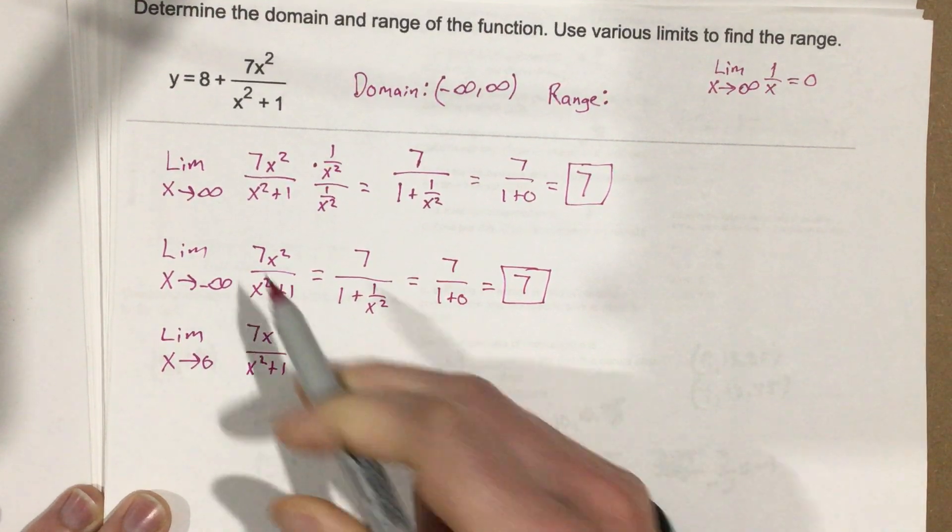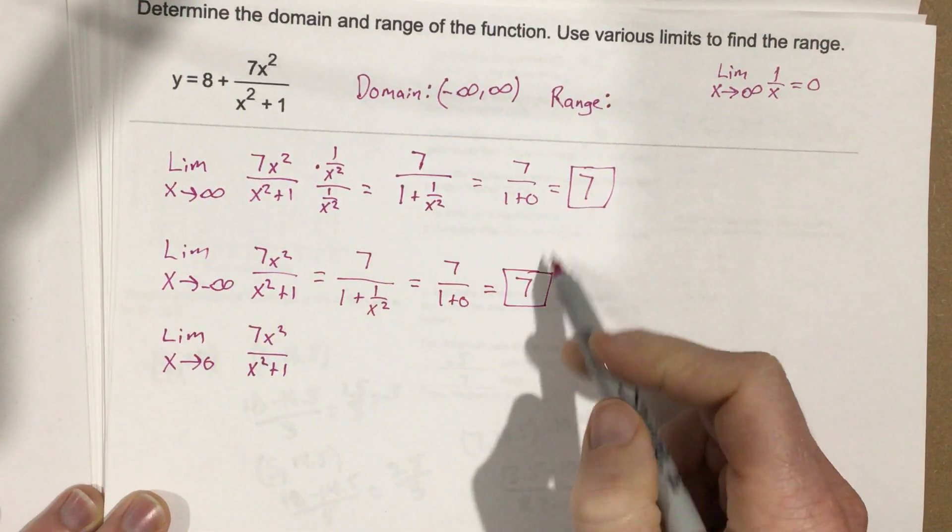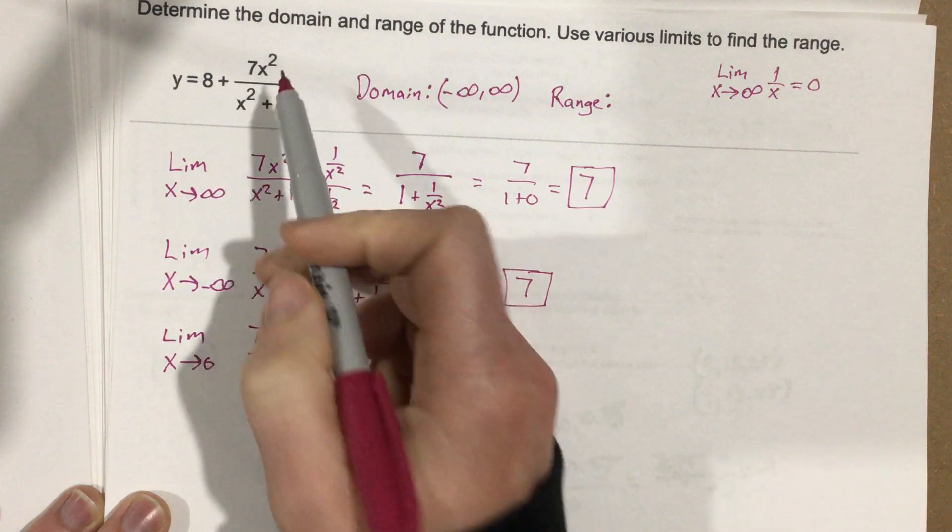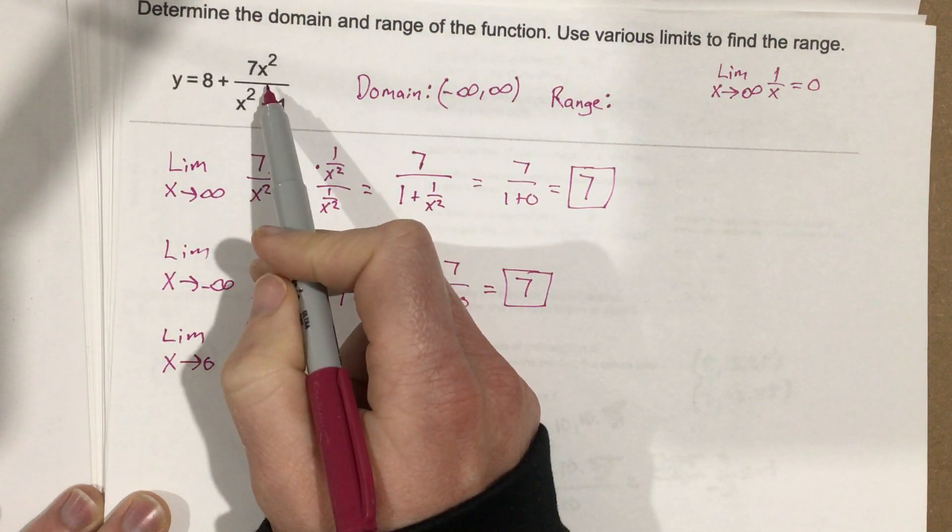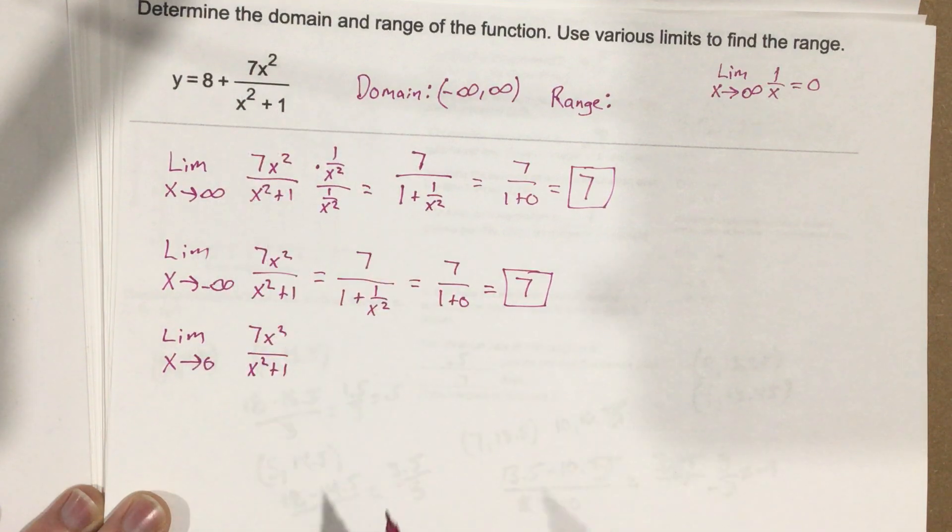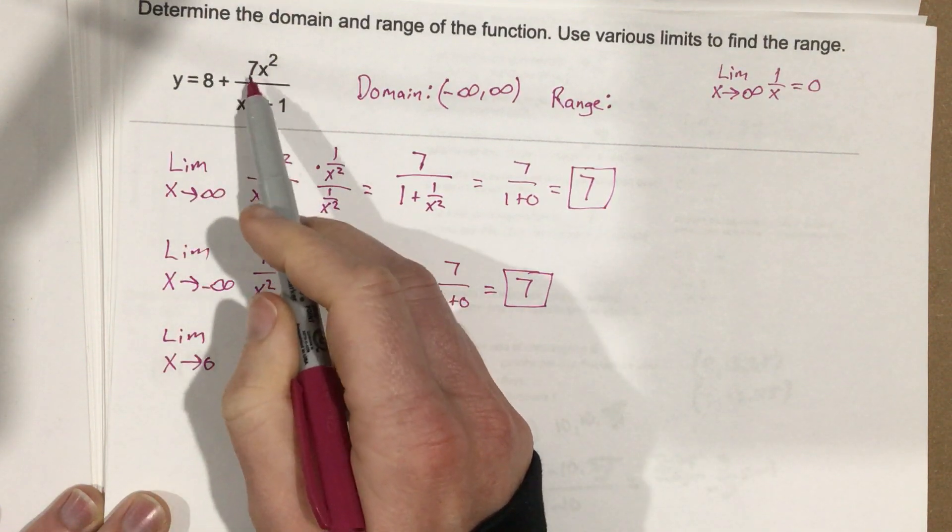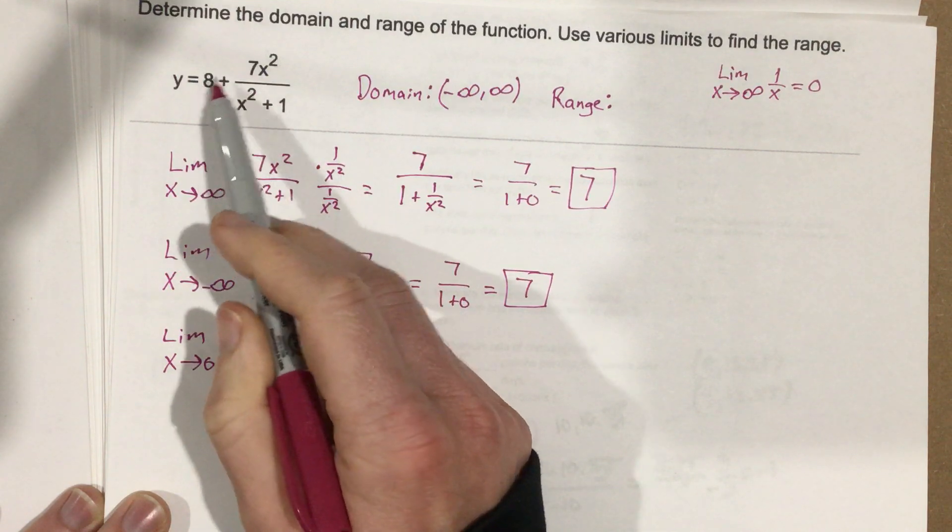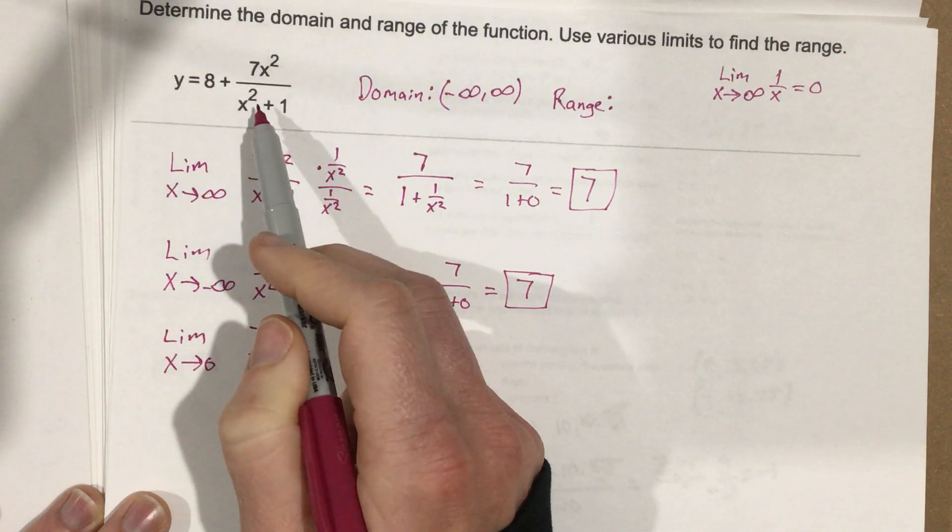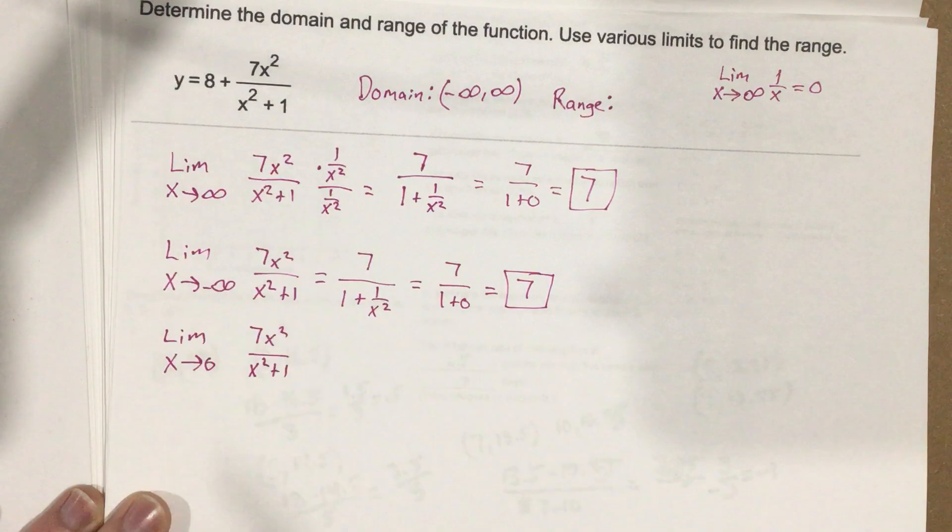As we approach either infinity or negative infinity, we're getting 7 as our limit, meaning this rational is approaching 7. If we think about that, then that means if this is approaching 7, 8 plus 7 is 15, so technically this whole function is approaching 15 in that case.